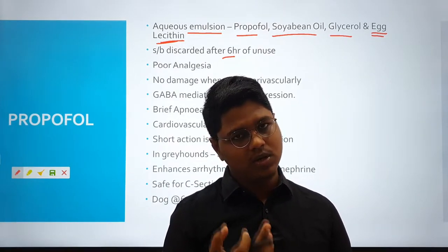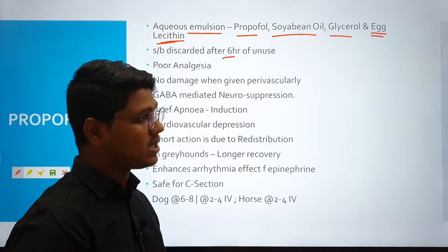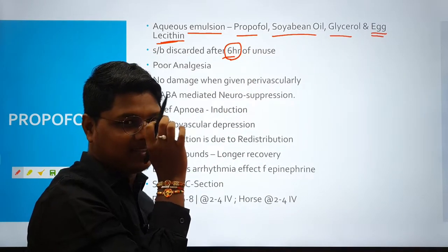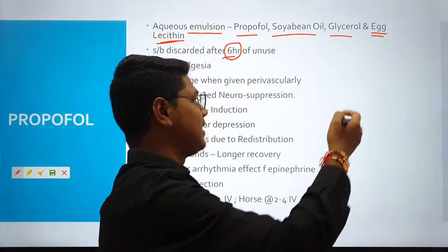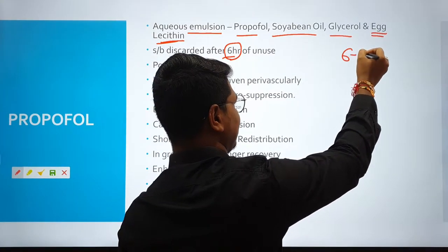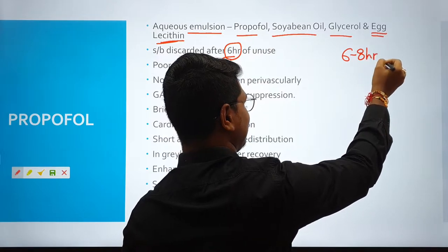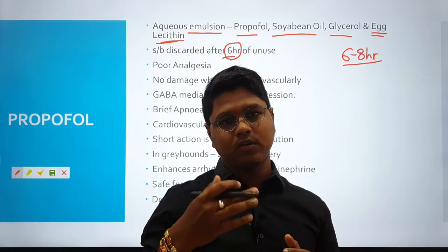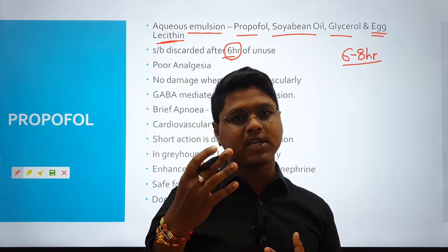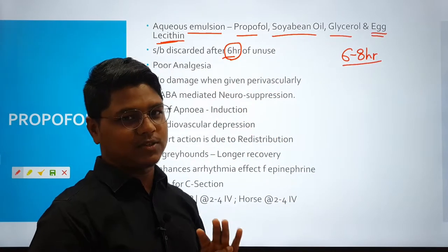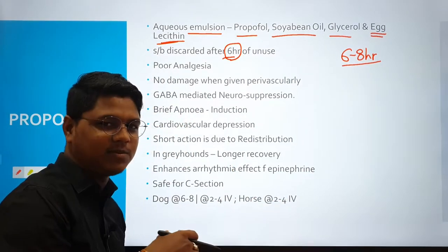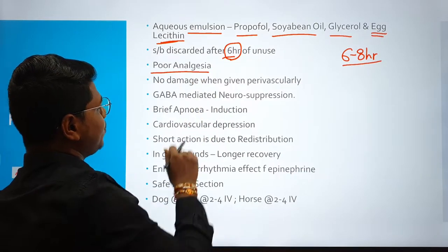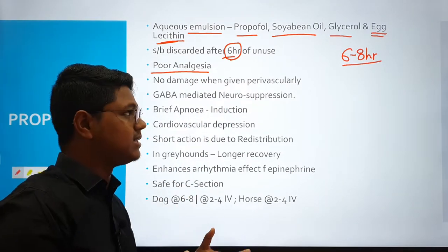If you have stored it for more than six hours, you have to discard the whole bottle. Why six hours? In wound healing, the golden period is six to eight hours. In six to eight hours, the bacterial population log phase touches its explosion point. This is why six hours. Relating concepts like this makes studying surgery more fun. Another property: propofol has very poor analgesia.